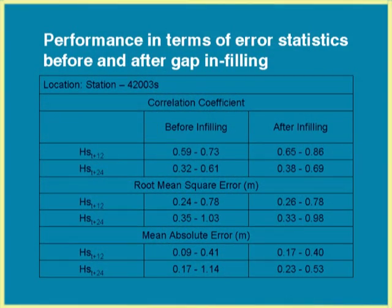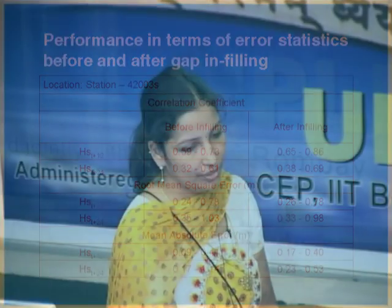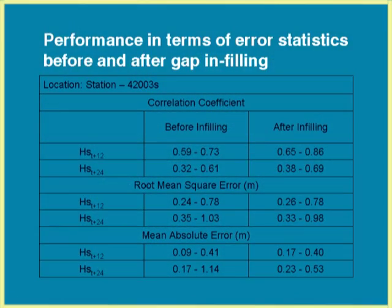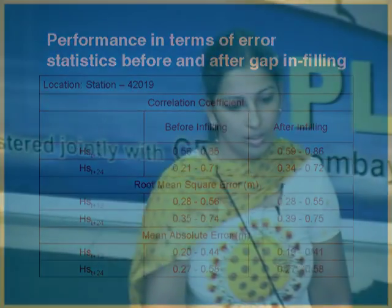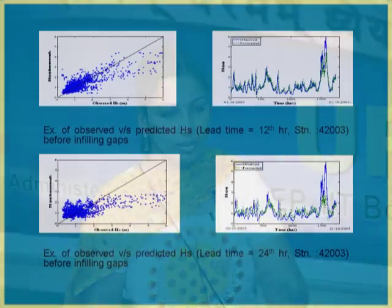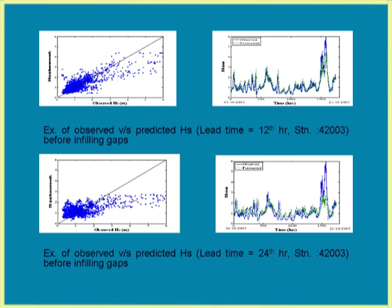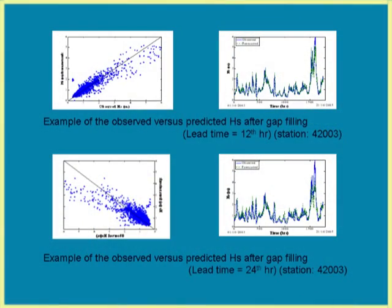We can see a lot of improvement with the help of error measures. The correlation coefficient before and after the filling is shown for stations 42003 and 42019. The left-hand side shows scatter plots and the right-hand side shows time series plots for 12th and 24th hour predictions for station 42003, before and after filling the gaps, and we can see the improvement when gaps are filled prior to applying the network.